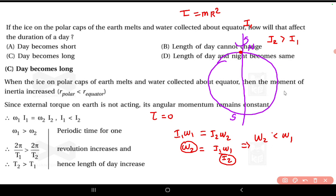If the ice starts melting and collects at the equator, the distance will increase. So what will happen? The moment of inertia increases, and as the moment of inertia increases, the ω₂, that is the new revolution speed, will decrease. So ω₂ is less than ω₁, meaning it will rotate with less angular speed.